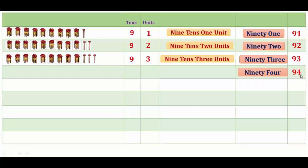Then 94. Here, 1, 2, 3, 4, 5, 6, 7, 8, 9 tens and 4 units make 94.